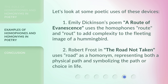Let's look at some poetic uses of these devices. First, Emily Dickinson's poem 'A Root of Evanescence' uses the homophones 'root' and 'route' to add complexity to the fleeting image of a hummingbird. Second, Robert Frost, in 'The Road Not Taken,' uses 'road' as a homonym, representing both a physical path and symbolizing the path or choice in life.